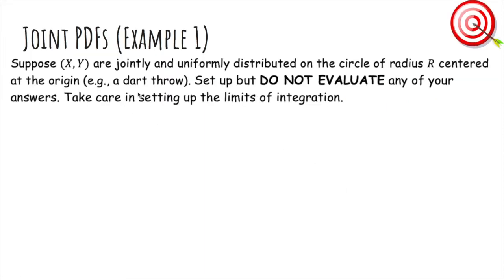We'll do an example now. Suppose (x,y) are jointly and uniformly distributed on the circle of radius R centered at the origin, for example a dart throw. We're going to set up but not evaluate any of our answers, taking care especially in setting up the limits of integration.